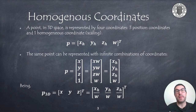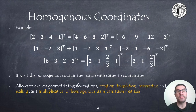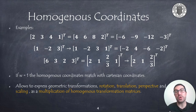In 3D space, a point in homogeneous coordinates is represented by four coordinates: three corresponding to the position coordinates, and another one corresponding to a scaling. The representation in homogeneous coordinates is not unique, and therefore there are infinite combinations of homogeneous coordinates that represent the same point. We can transform a point in homogeneous coordinates to Cartesian coordinates by dividing the first three coordinates by the scale coordinate. Here we see some basic examples of the representation of the same 3D point in homogeneous coordinates.